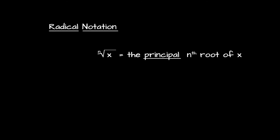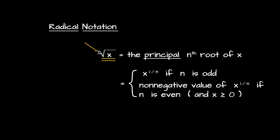This leads us to radical notation. Writing x under a radical sign with n as a superscript means we want the principal nth root of x. The principal nth root equals x to the 1/n when n is odd, because in that case there is only one nth root. When n is even, the principal nth root is the non-negative value of x to the 1/n, since there may be both a positive and a negative nth root — so we take the positive one. By convention, the radical sign on its own implicitly means n equals 2, i.e., we take the non-negative square root of x.